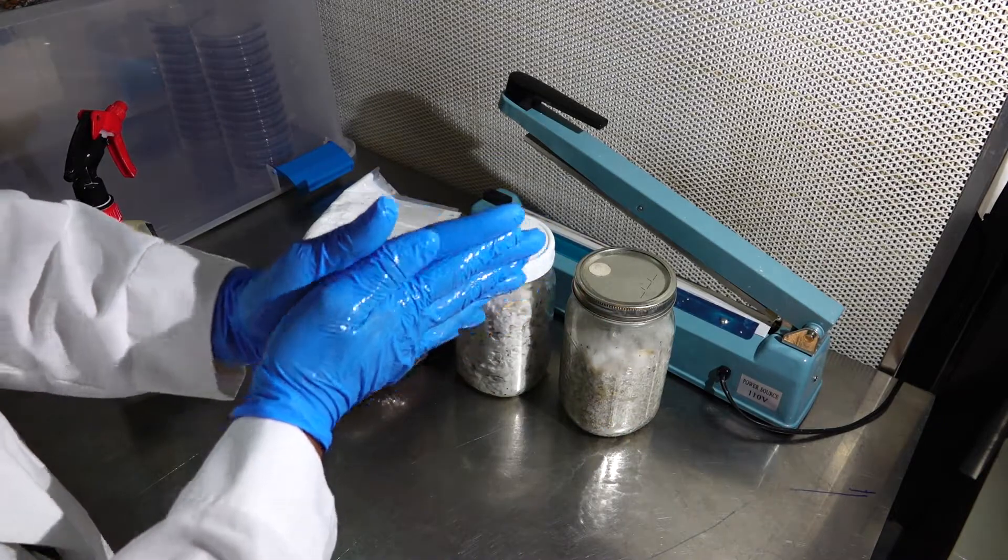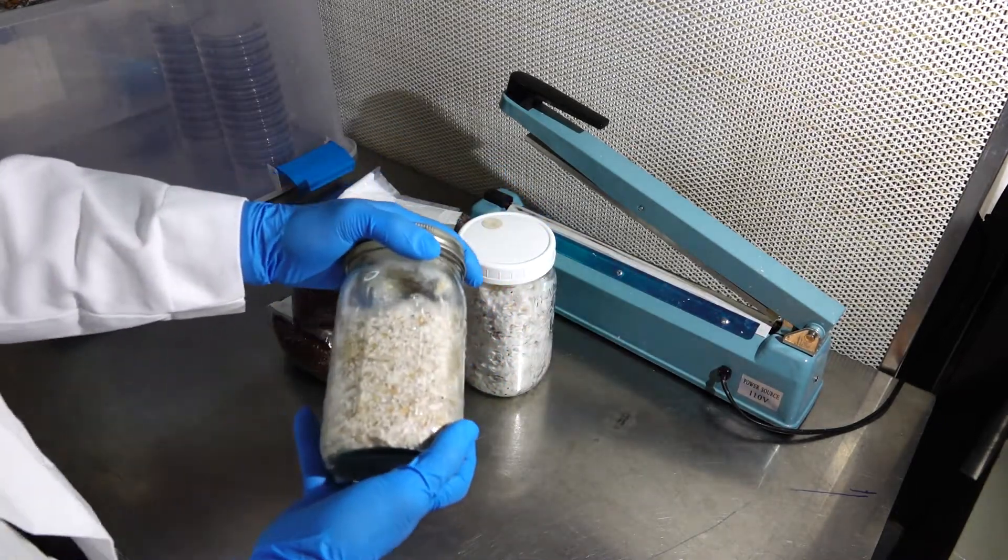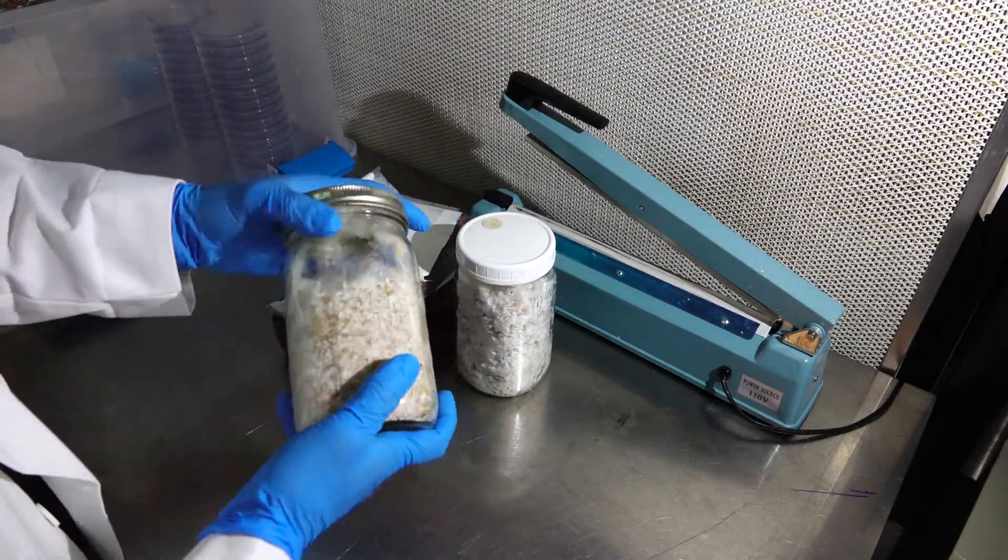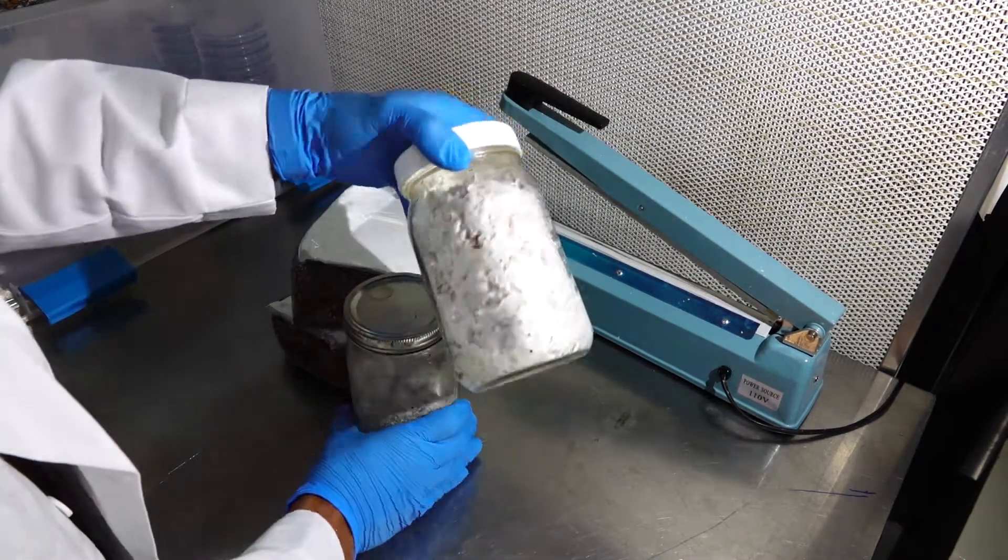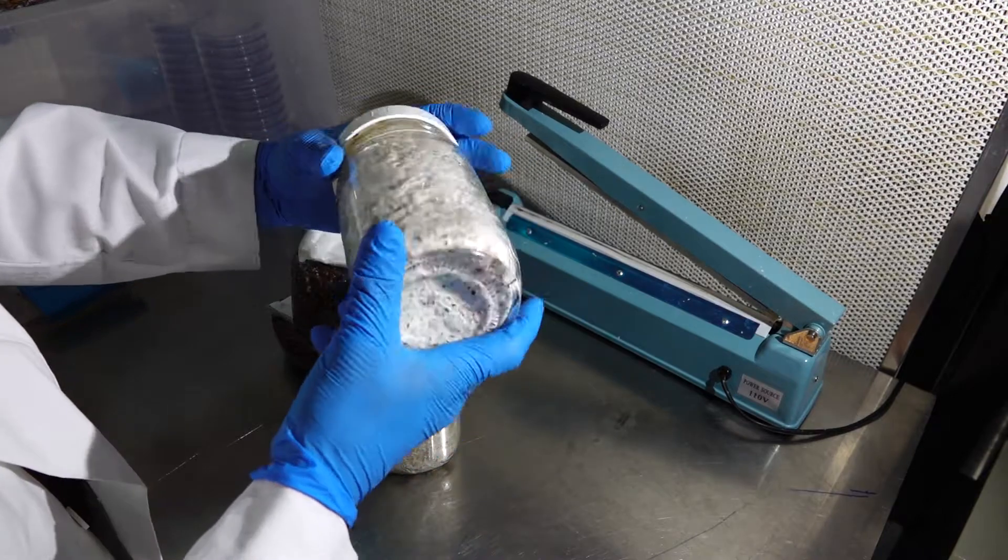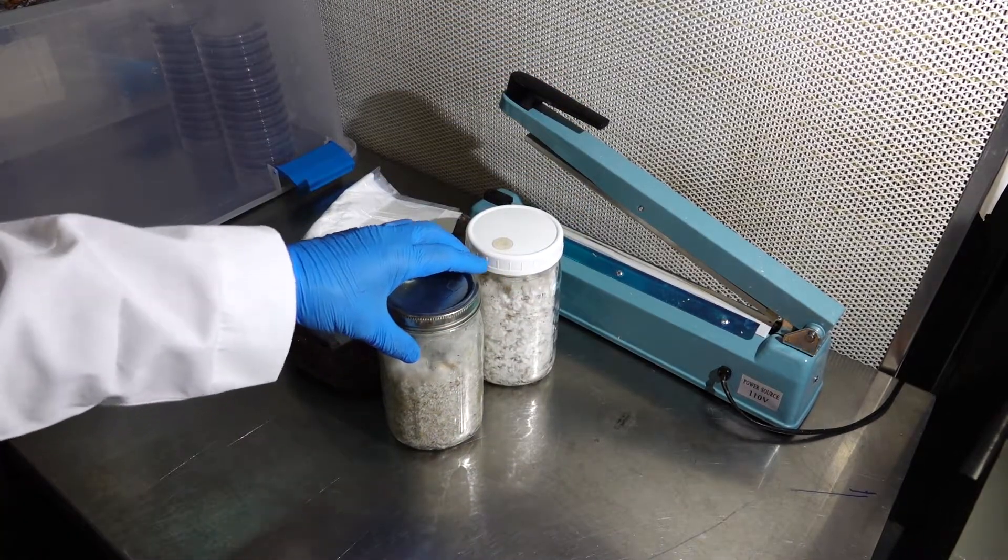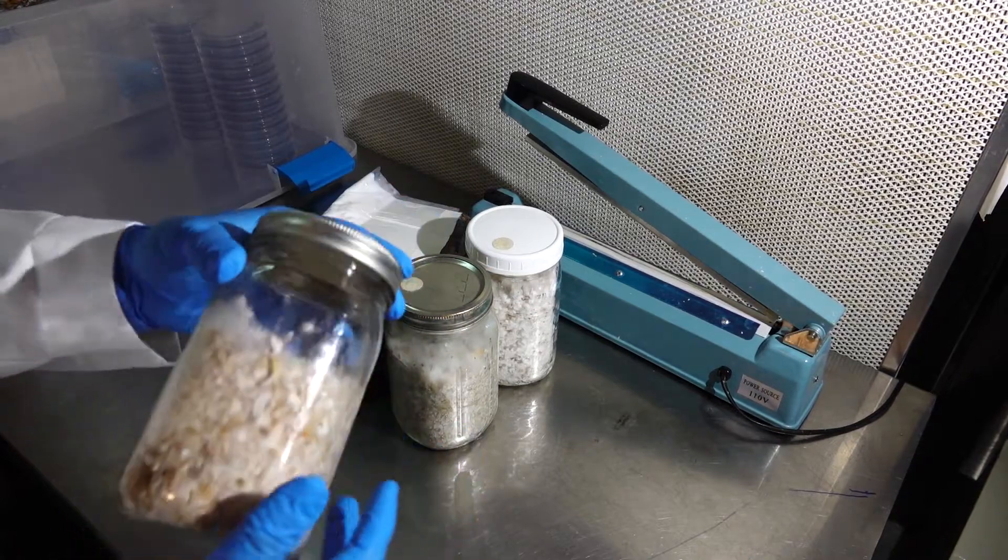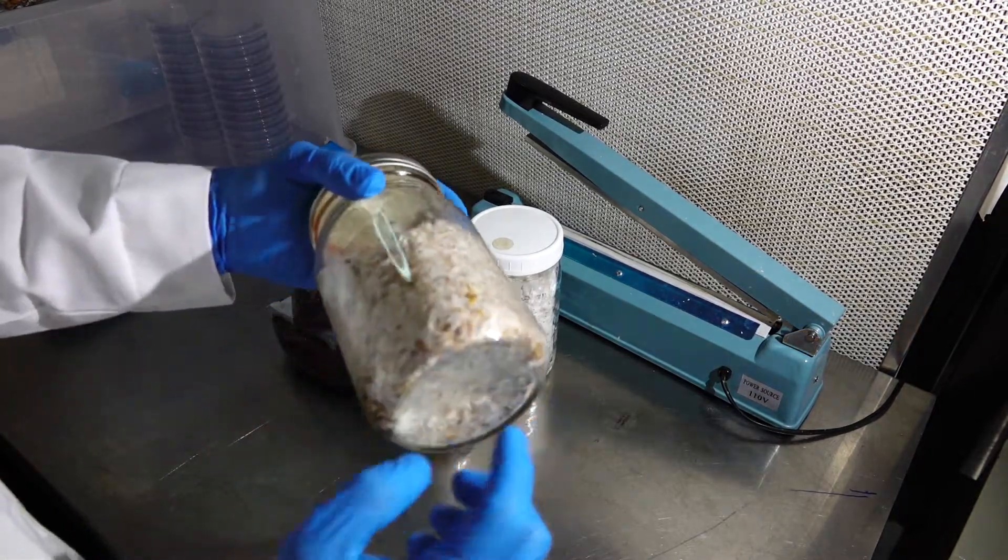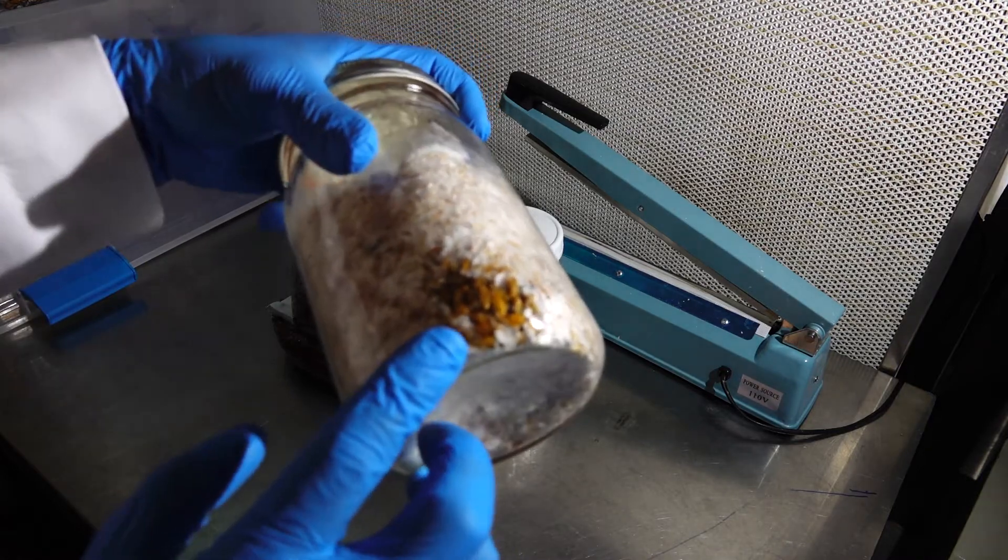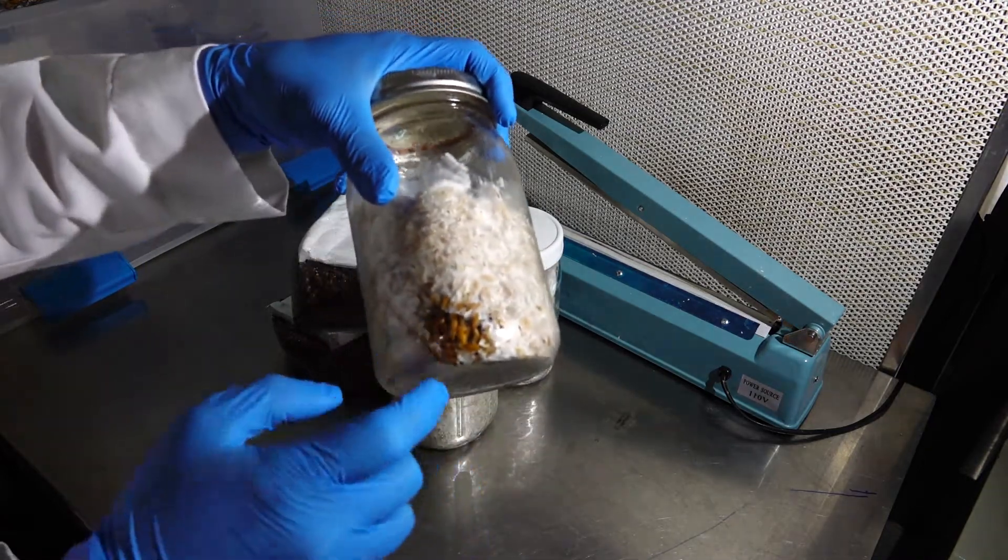The first thing you're gonna want to do is have a fully colonized jar. When I say fully colonized, I mean fully colonized. You want your jar to be 100% white. You want to make sure that all of your mycelium has attached itself to the grain.